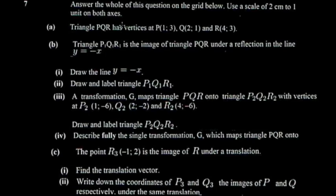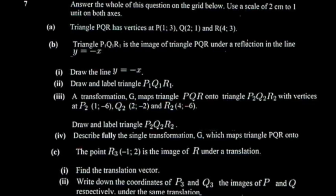The instruction is: answer the whole of this question on the grid below, using the scale two centimeters to represent one unit on both axes. So two centimeters represents one box — from here to here on your graph paper. For every box you're going to put one unit.